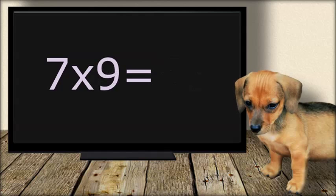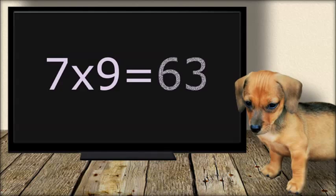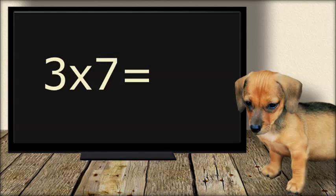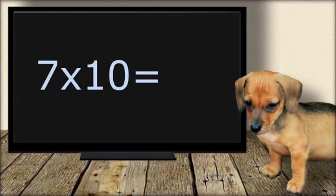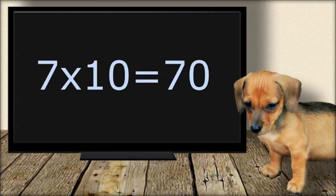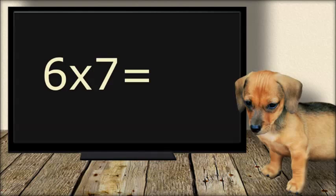One times nine equals sixty-three. Three times seven equals twenty-one. Seven times ten equals seventy. Six times seven equals forty-two.